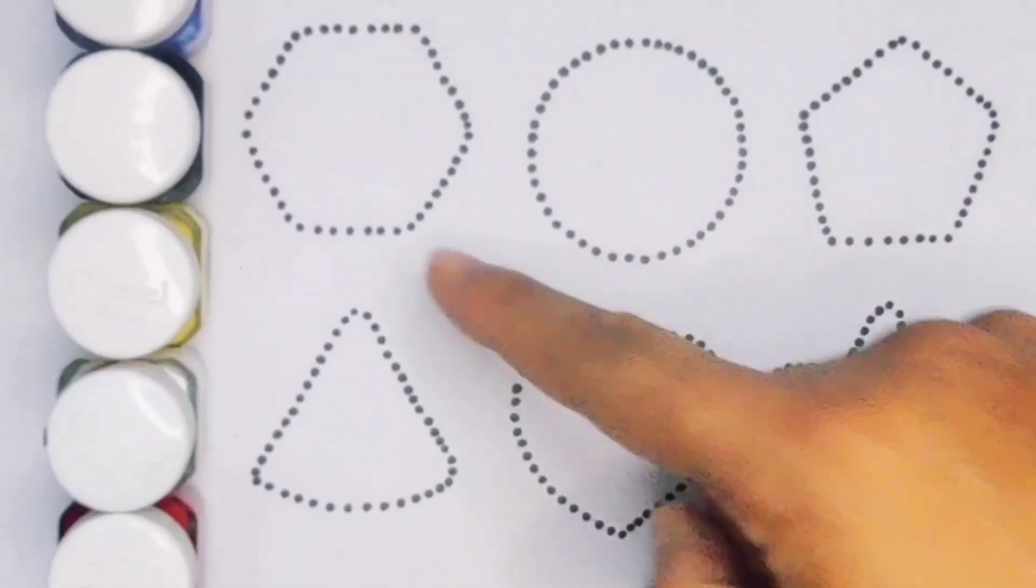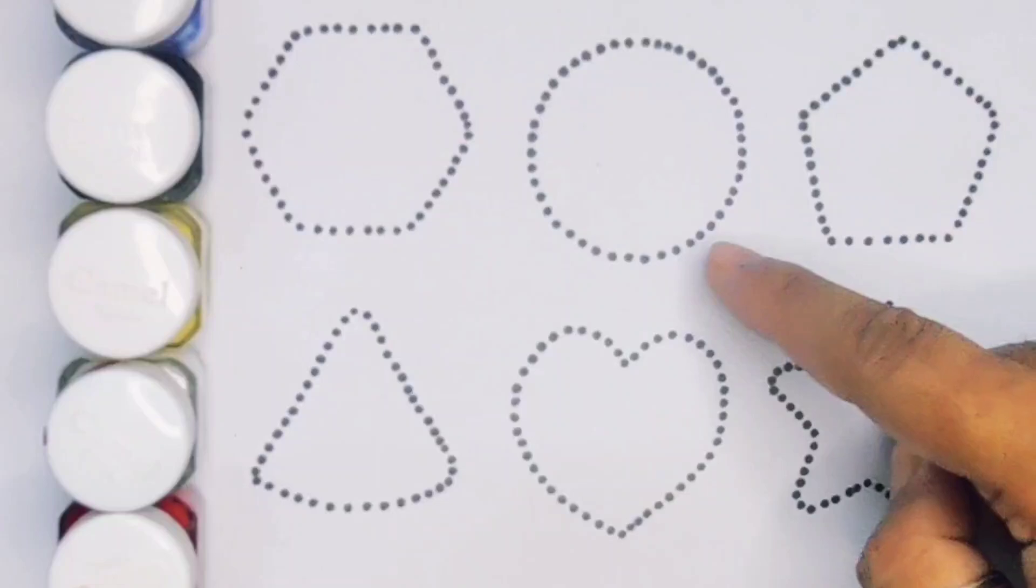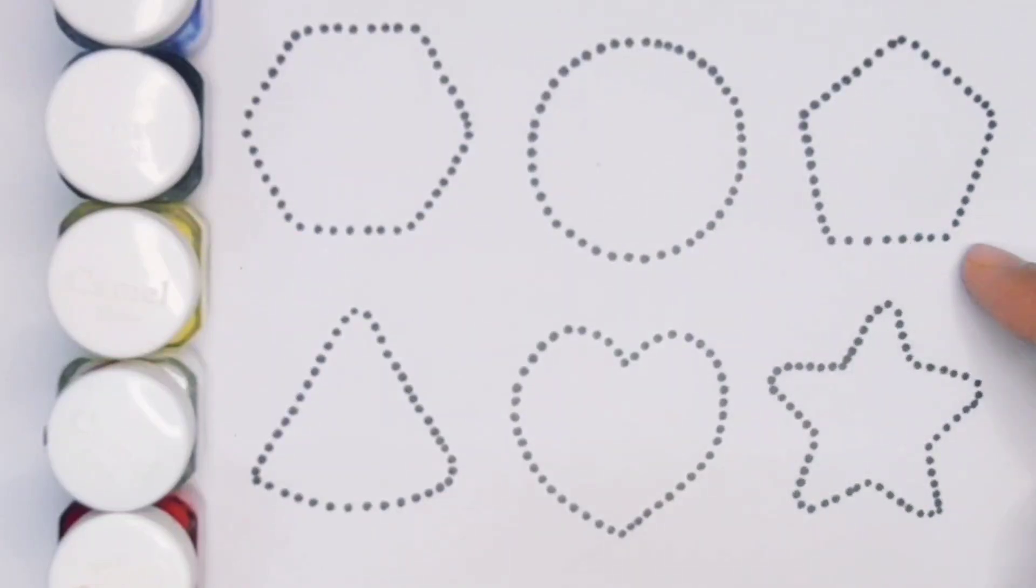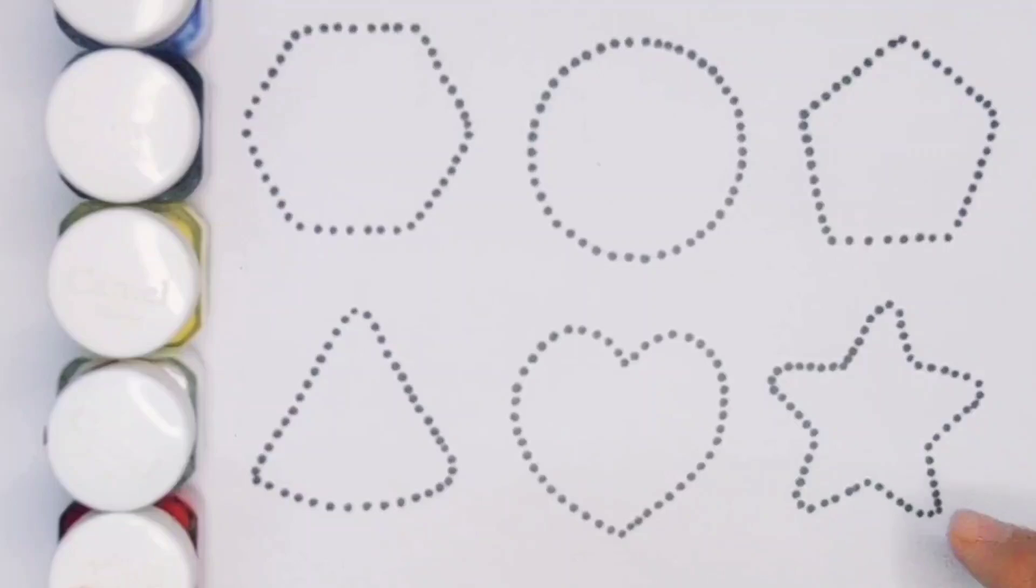Now let's learn the 2D shapes: hexagon, circle, pentagon, triangle, heart, and star.